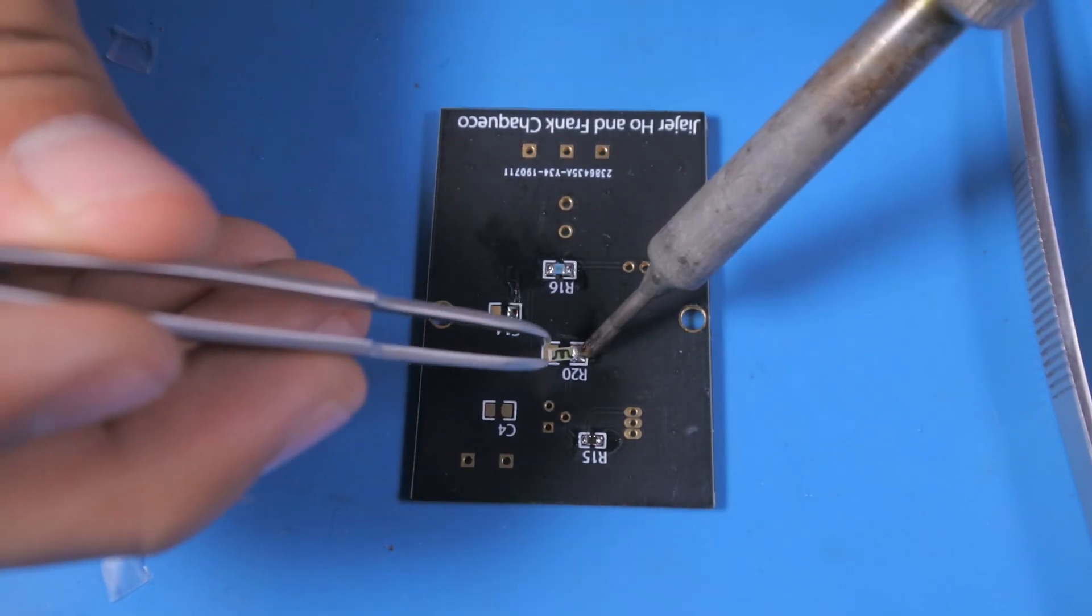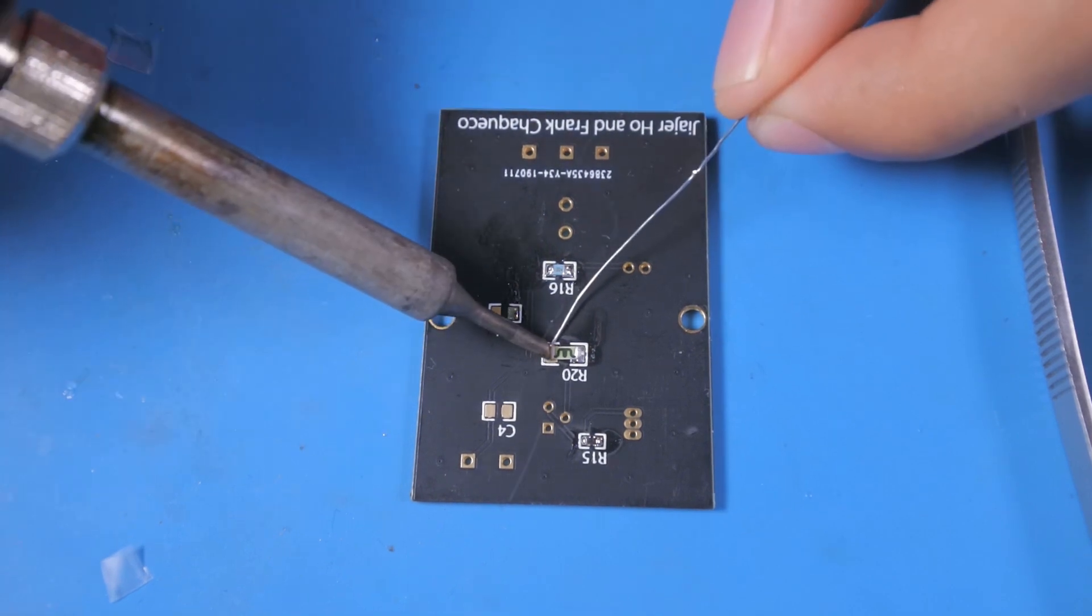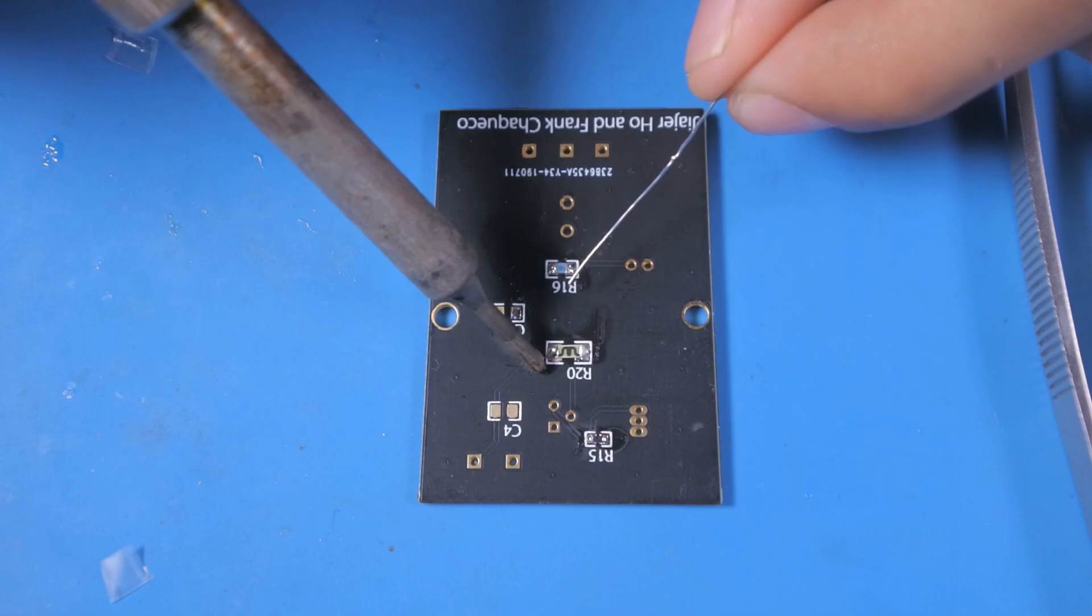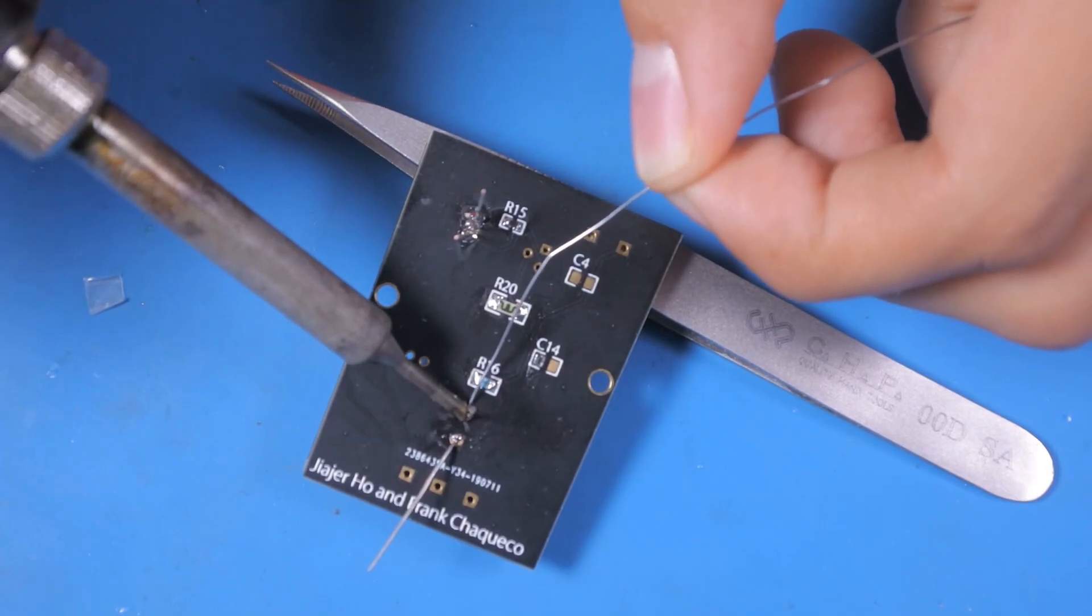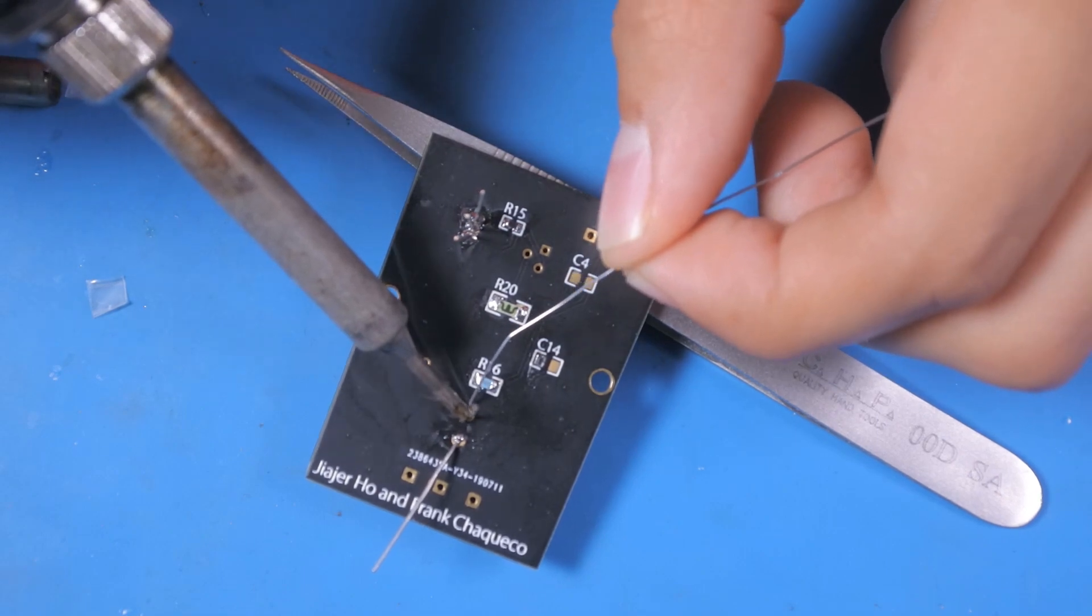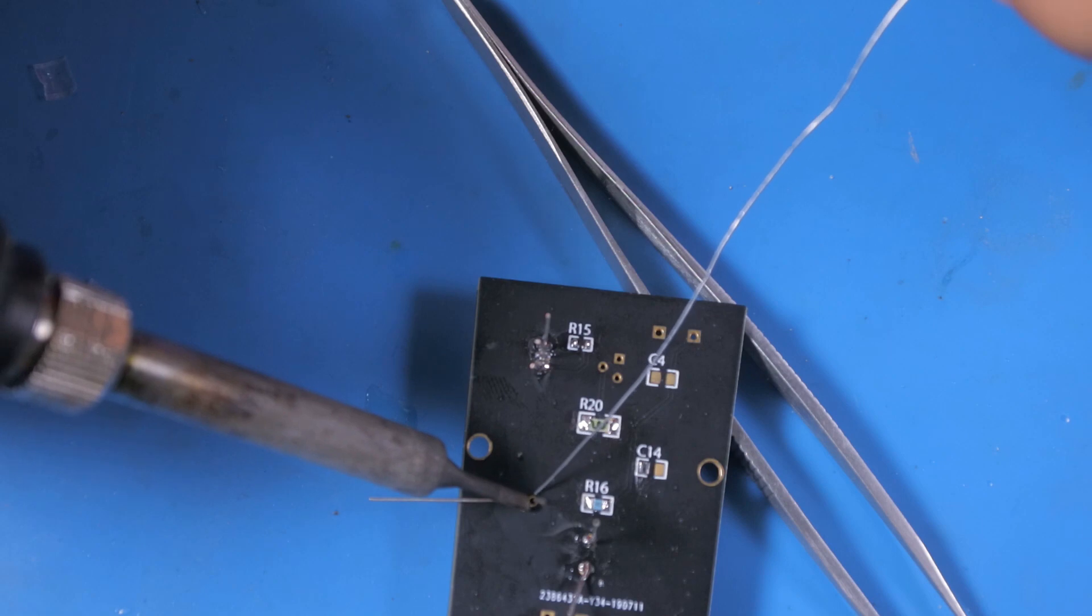We utilized a mix of through-hole and SMD components with tolerances as low as 5% or less. Our resistors, for example, had a 1% tolerance. Soldering should be fairly simple. We used no-clean flux for our solder which didn't require any additional cleaning. If you're using rosin core solder, you will need to clean it with 98% isopropyl.